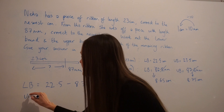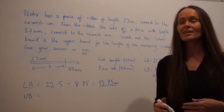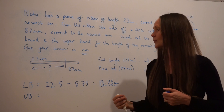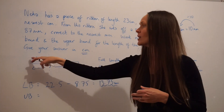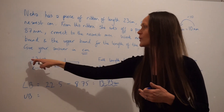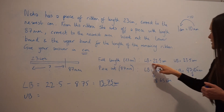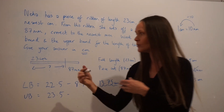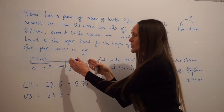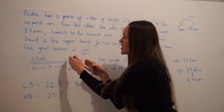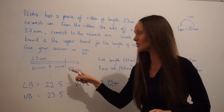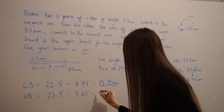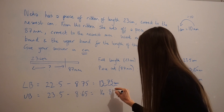Next, let's look at the upper bound. That means the remaining piece of ribbon has to be as large as possible. In order for that to happen, I need to take the longest piece of ribbon to start with — the upper bound for the entire length, which is 23.5. And if I want the remaining ribbon to be as big as possible, I want to cut off as little as possible, so I take the lower bound for the piece she's cutting off, which is 8.65. Subtracting that gives 14.85 centimetres.